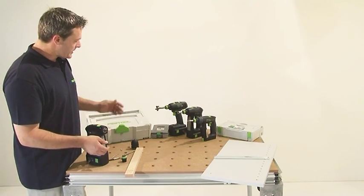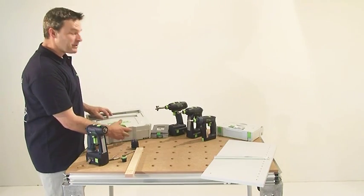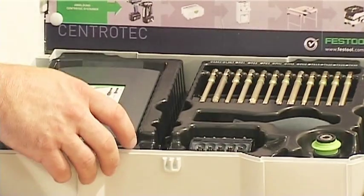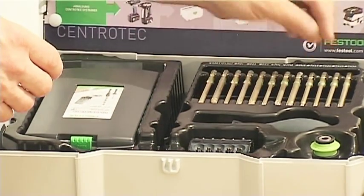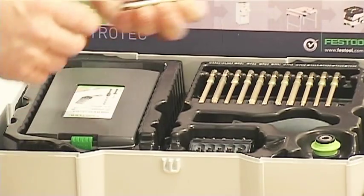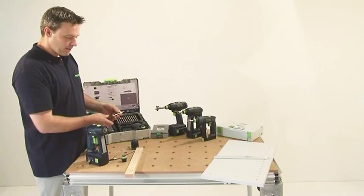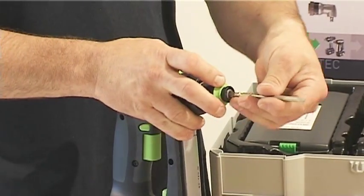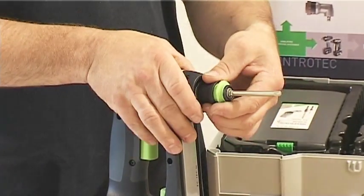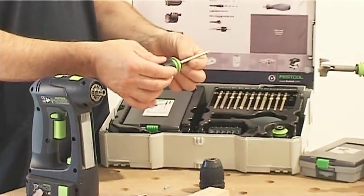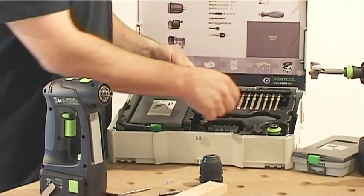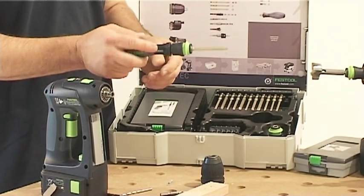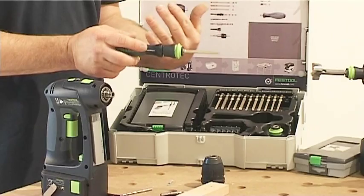Festool has a system which includes nearly all Centrotec accessories. For example, you have the option to use a bit extension. You can mount the Centrotec chuck to a handle as well to readjust, for instance, the filigree hardware and cabinet doors.